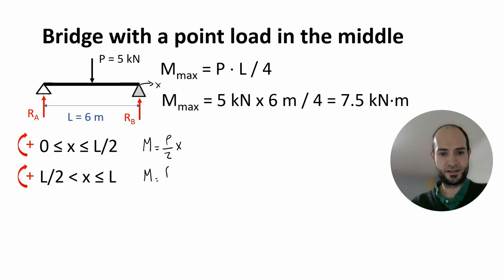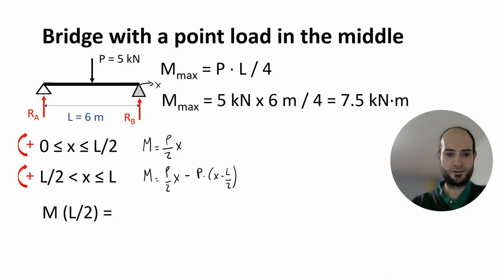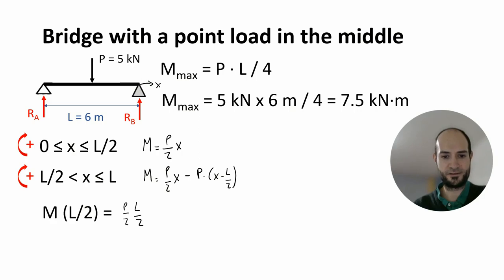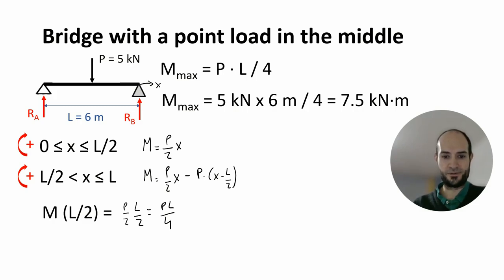And then for the rest, again it's going to be P divided by 2 times x, and then we subtract the load multiplied by x minus half the span. Now, what's the value at mid-span? We say P divided by 2 times x, that is L divided by 4, so we have PL divided by 4. Same result. And this is valid for any bridge with just a point load in the middle, giving us the same bending moment as before: 7.5 kNm.